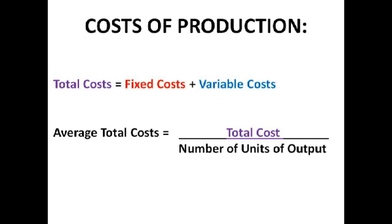Variable costs change depending on the amount of stuff you're making — that's things like raw materials, consumables, and labour that isn't on a permanent contract. For example, if I'm making wooden cars and was making 50 a week, the cost of wood might be £50, but if I was only making 20 a week, it might only be £20. So it's a variable cost because it changes depending on the amount produced.